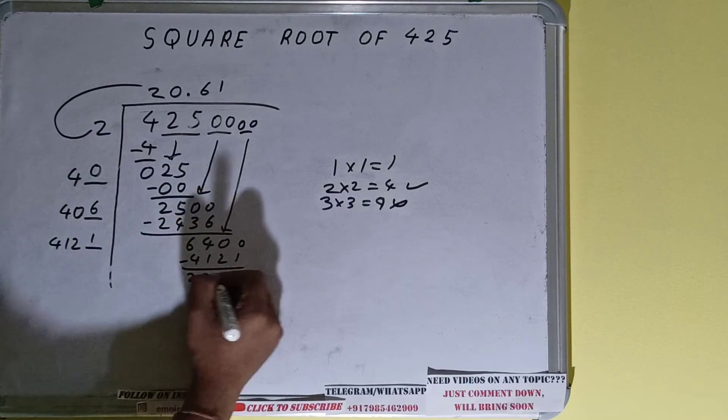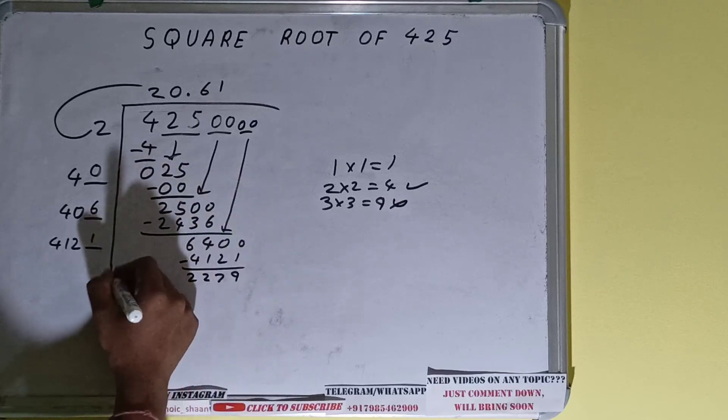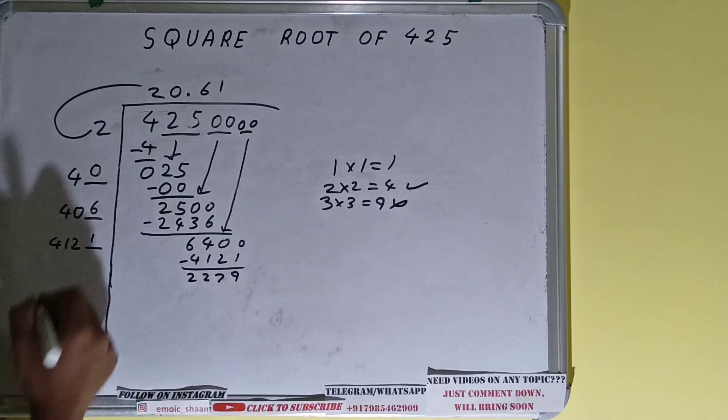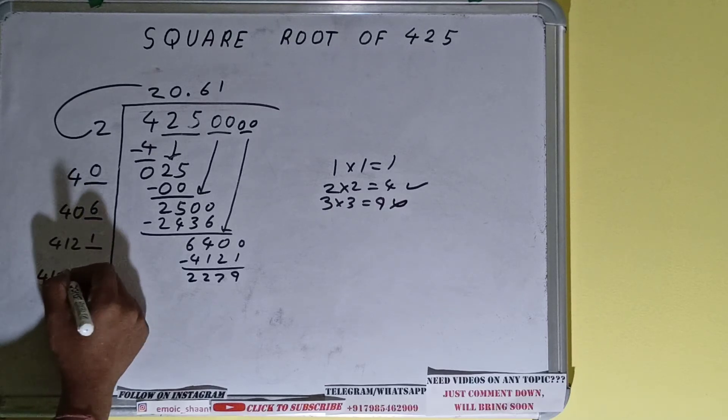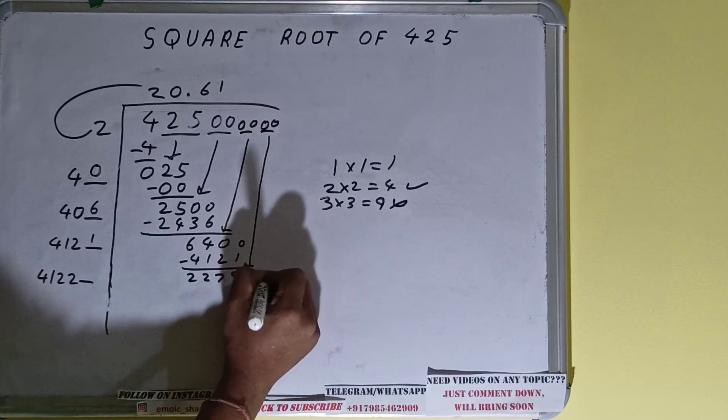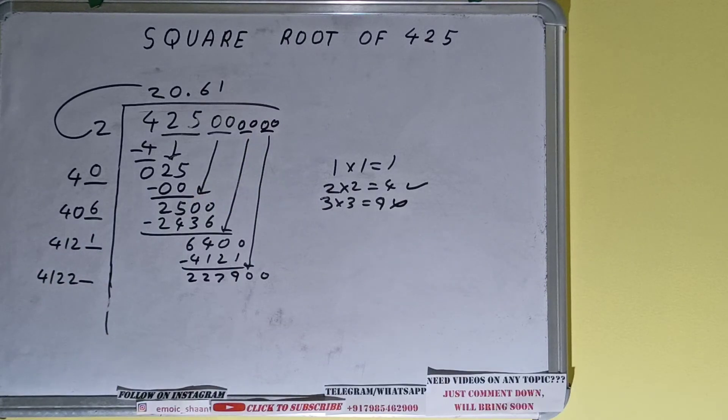It will be 2279. Now 4121 into 1, so add both - 4121 plus 1 will be 4122, and one digit extra. This number we need to make it big, so bring the next pair of zeros down and it will become 227900.